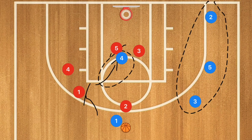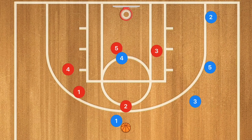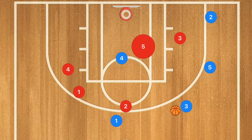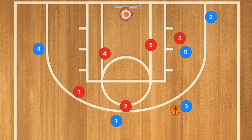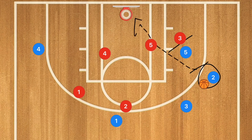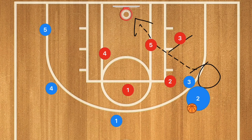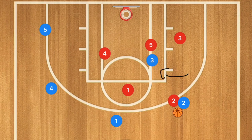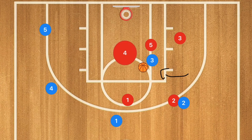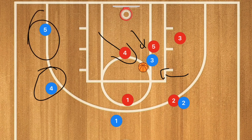If that paint touch isn't open, we've shifted the defense. Player one passes to player three, shifting the defense again. Player four pops out and player five sets a screen down for player two, who pops up for a potential open shot. If not, there's a dribble handoff with player two. Player five shifts out, player three rolls into the paint for another paint touch opportunity, which may draw defenders over and leave two players open — and so on and so forth.